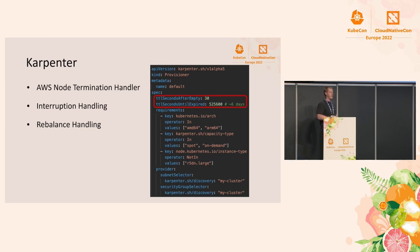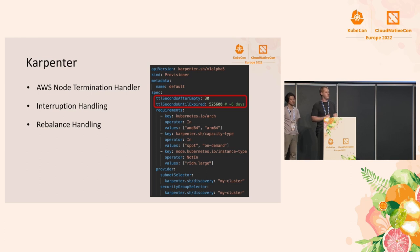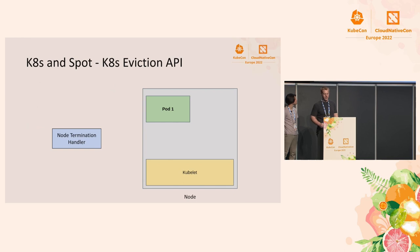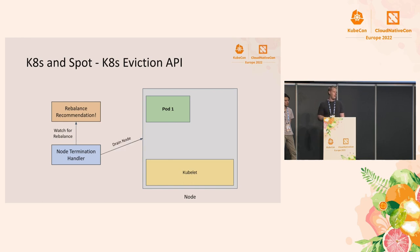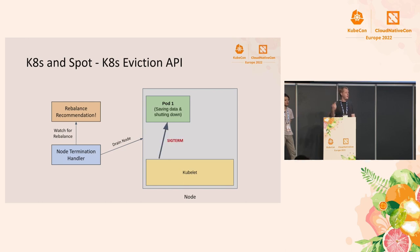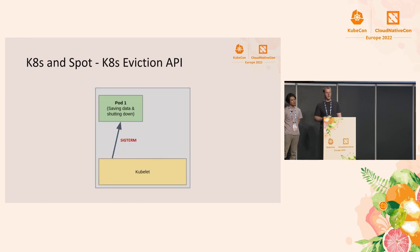Karpenter today doesn't natively support watching for Spot interruptions, but you can always install the AWS Node Termination Handler in your cluster — which is easy to install — and it will pass the signal back so Karpenter can handle node evictions. This is similar to what Nick described, but with a rebalance recommendation. If you need more time than the two-minute interruption window, Node Termination Handler watches for rebalance recommendations and can drain or cordon the node. The eviction process then happens: the kubelet sends a SIGTERM, the pod shuts down within the termination grace period, and everything is cleaned up.